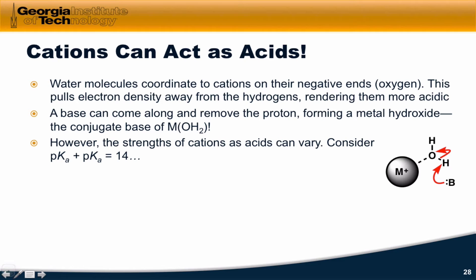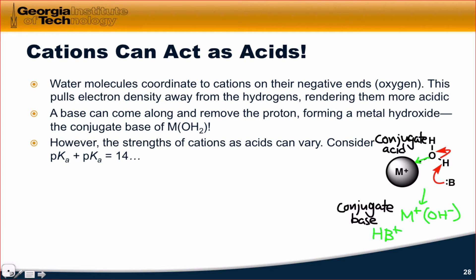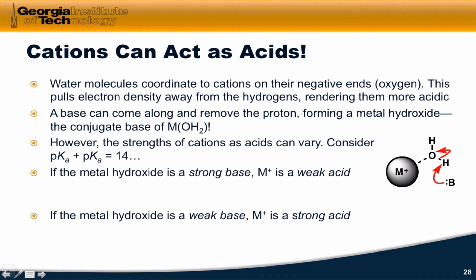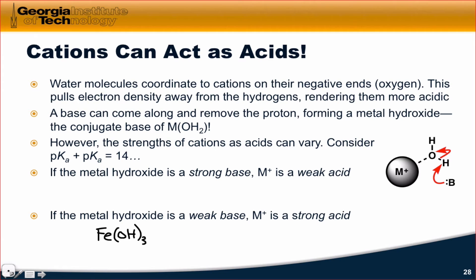Just like we saw for bases, the strengths of cations as acids can vary. The strength of a cation as an acid depends on how strongly it pulls electron density away from coordinated water molecules. If the metal hydroxide is a strong base — something like lithium hydroxide — that means the lithium cation coordinated by water molecules is a weak acid. If the metal hydroxide is a weak base, then the metal cation is a strong acid. A good example is iron(III) hydroxide, which is a very weak base. The acidic version contains an Fe³⁺ cation coordinated by six water molecules, and those six water molecules are very acidic.